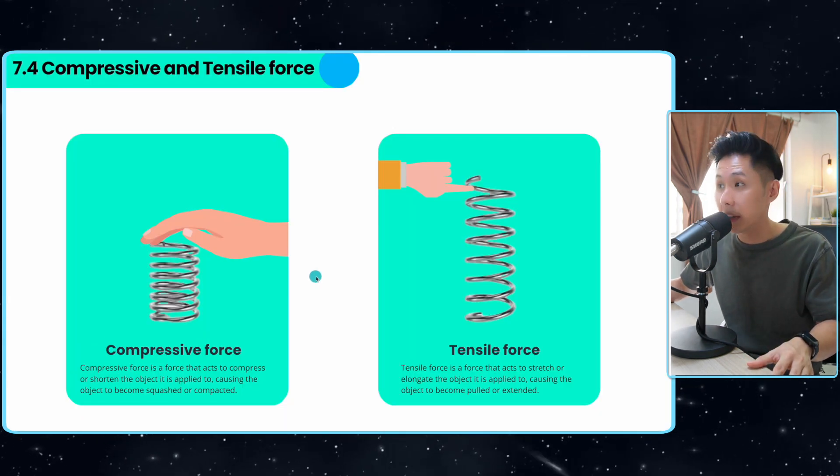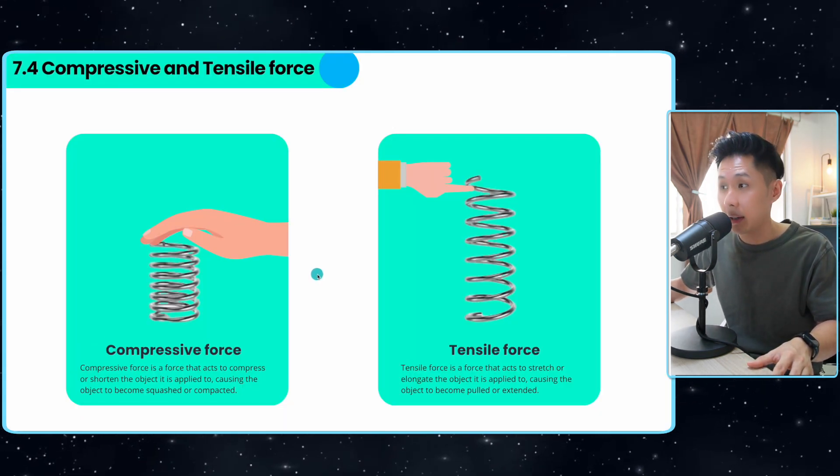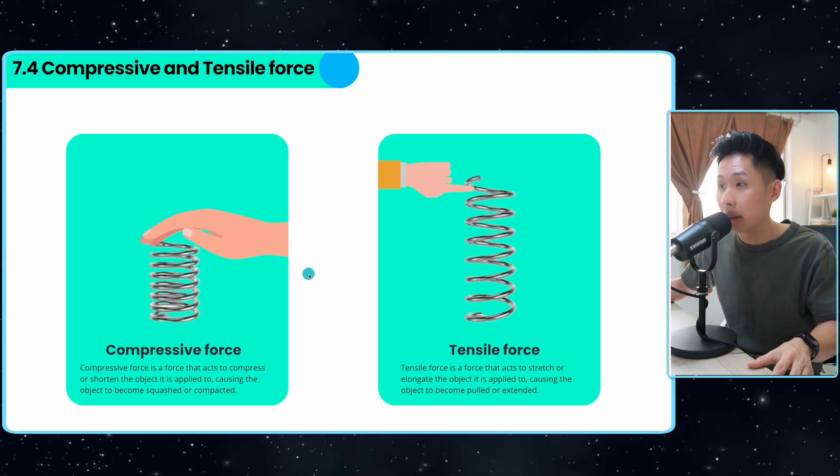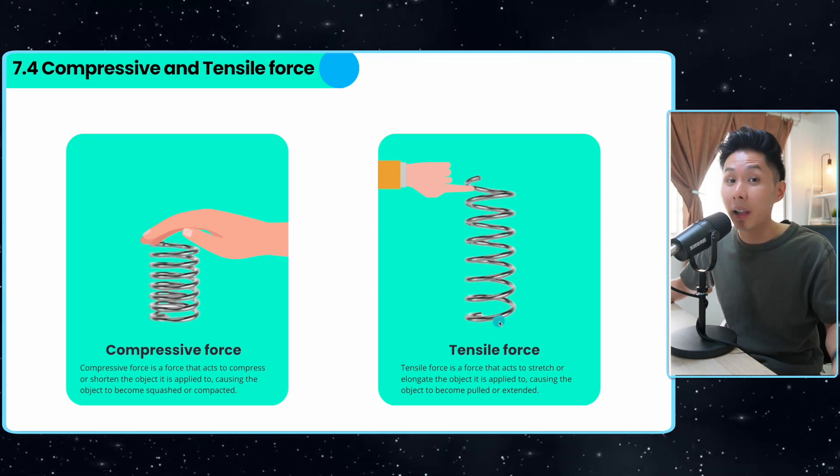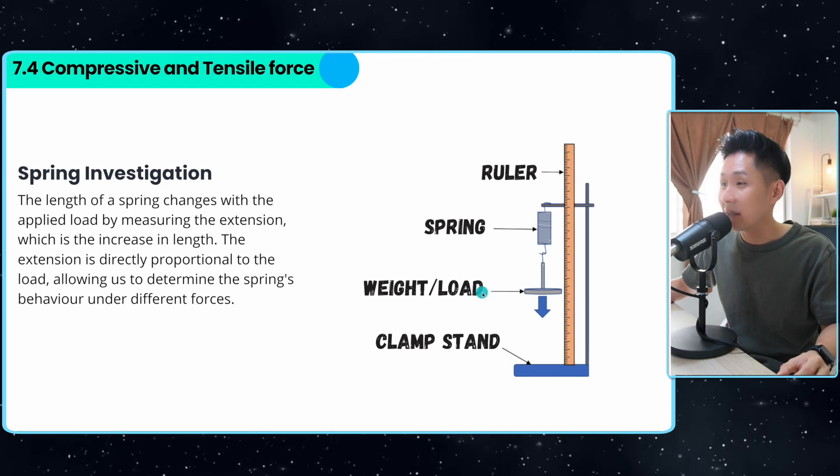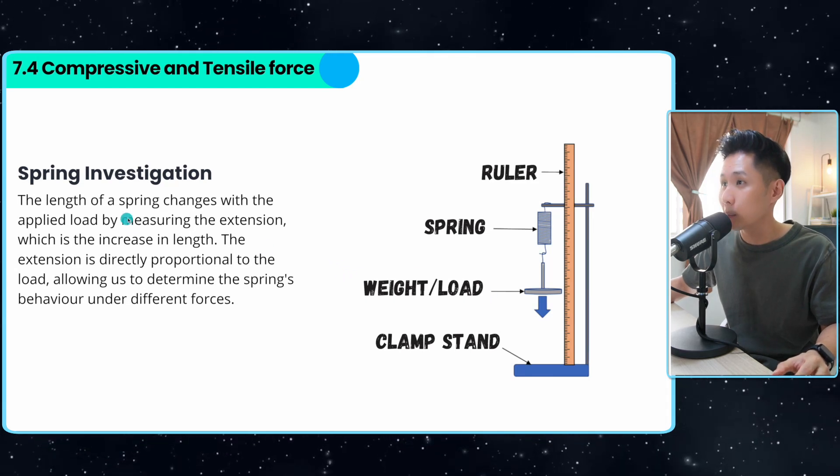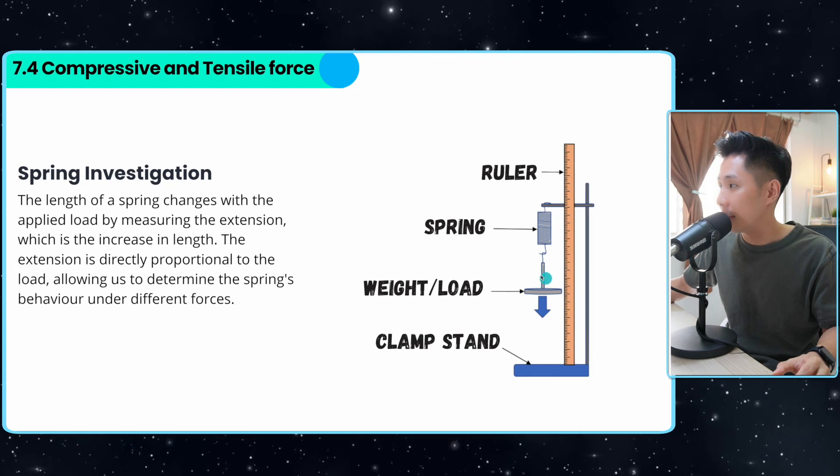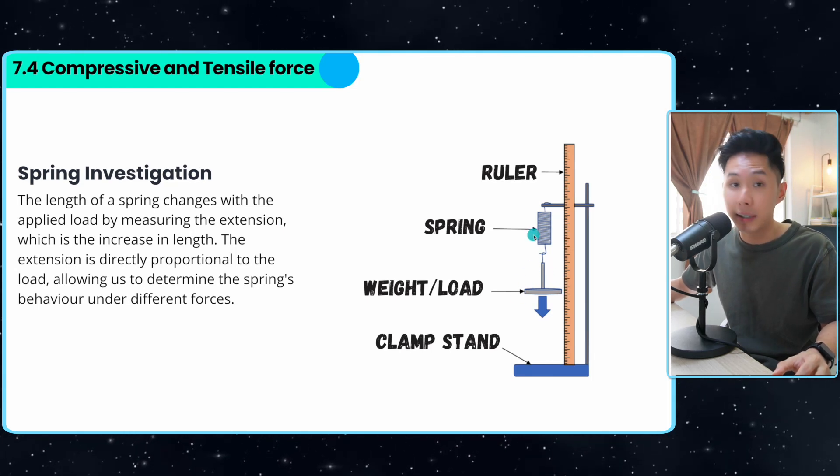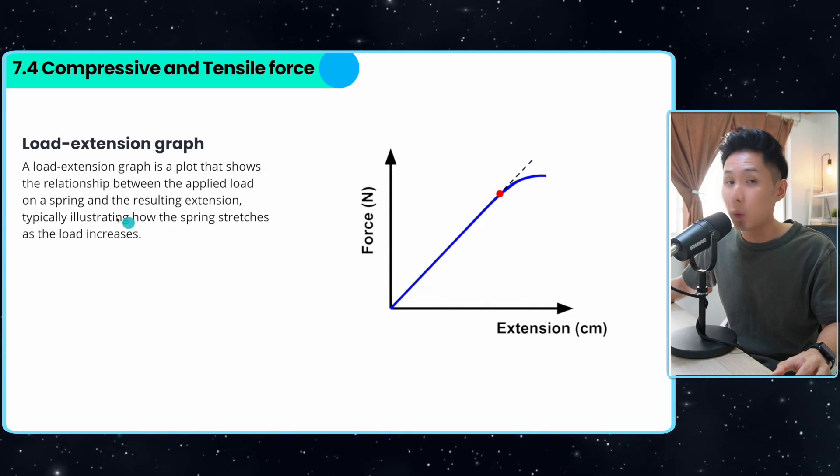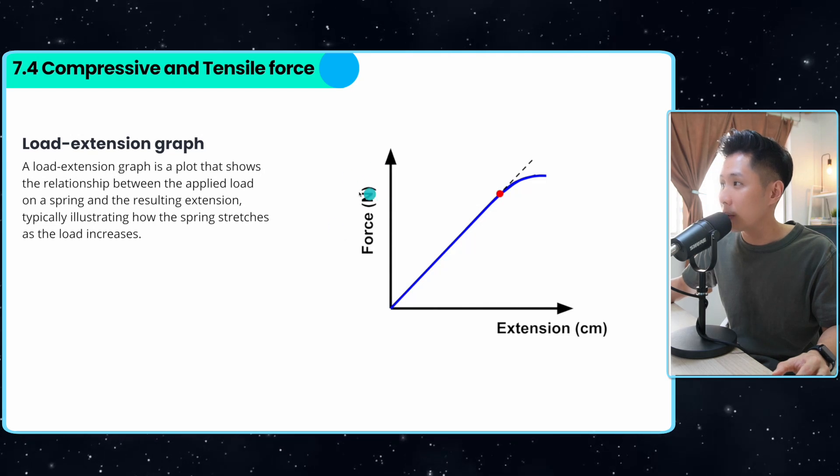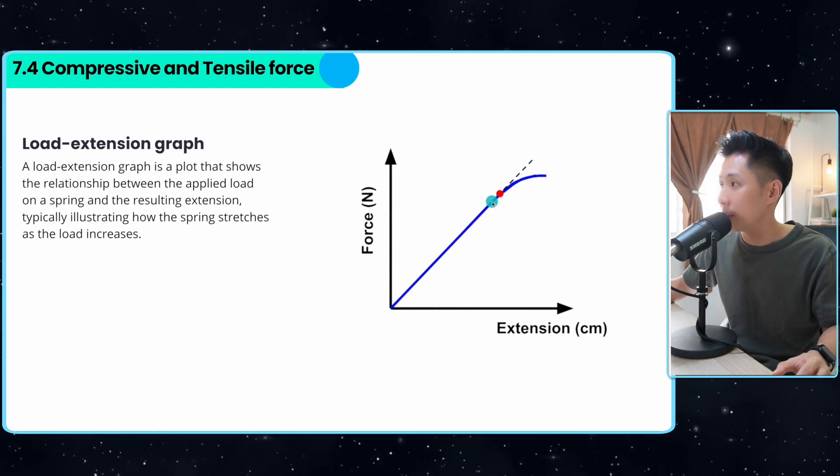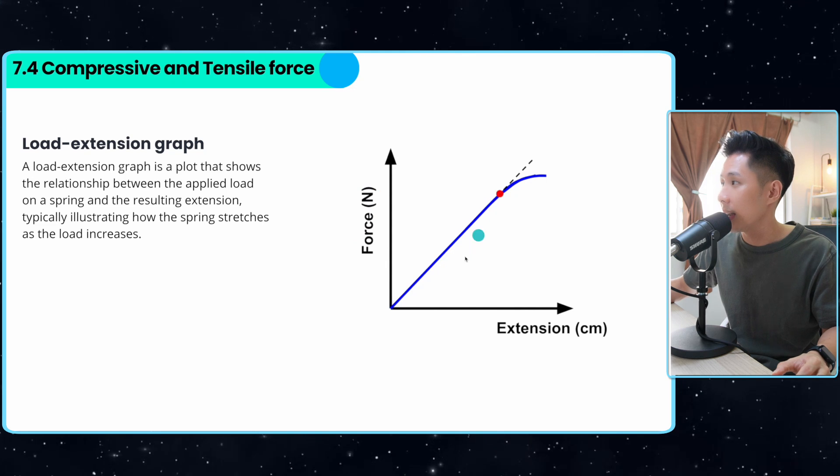Now let's look into something a little bit different, which is related to spring. The two types of forces you can apply to a spring is compressive force when you compress it. Tensile force is when you elongate the spring. We have learned this in IGCSE physics, spring investigation. We vary the amount of weight and we see how much the spring extends. Then we will be able to draw a load extension graph.